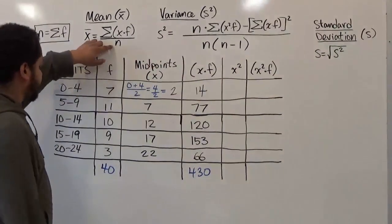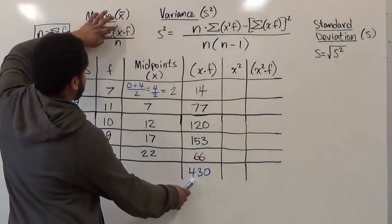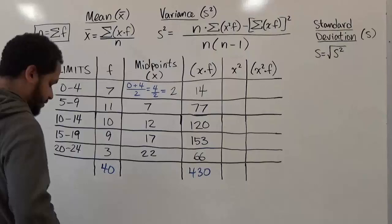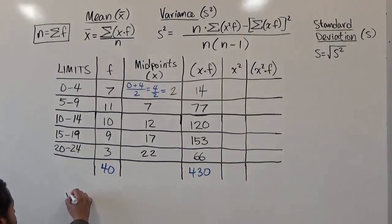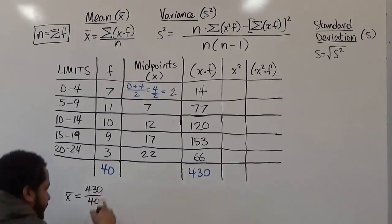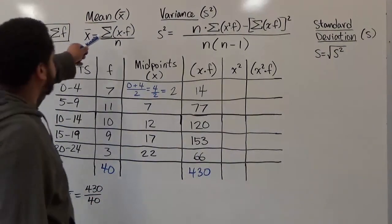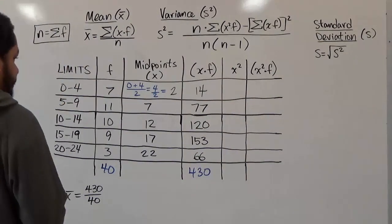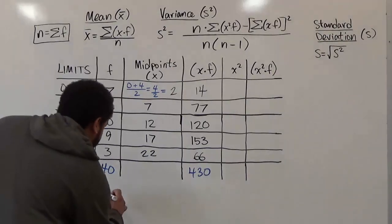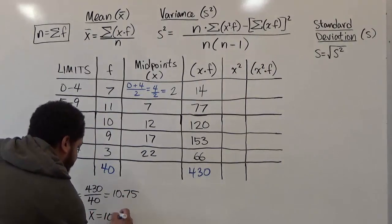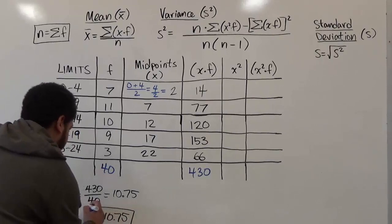In the mean formula, n is forty and the sum of x times f is four hundred and thirty. Our x-bar value is equivalent to the sum of xf divided by n, so that's four hundred and thirty divided by forty, which gives us exactly ten point seventy-five. So we have our mean: ten point seventy-five. One down, two to go.